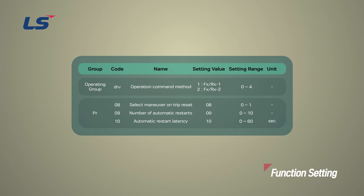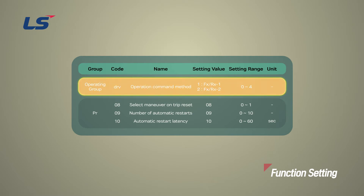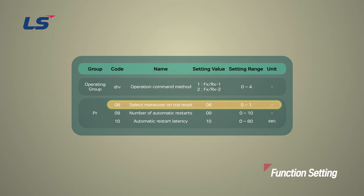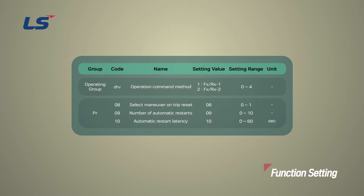Let's see how to program the Reset-Restart function. In order to use the Reset-Restart function in G100, the command source in the Operation Group parameter must be set to the Terminal Block Operation command method of number 1 (FX/RX1) or number 2 (FX/RX2). Next, set PR group number 8 parameter to number 1 (Yes) to activate the Reset-Restart function. After setting the number of restart attempts in parameter 9 of PR group, set the restart delay time in the 10 parameter of the PR group. All settings are entered to enable this function.